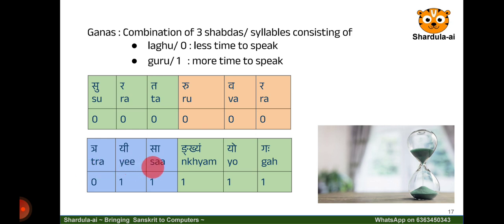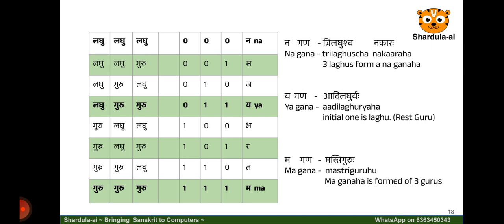Contrast that to another line in the same composition: trai saankhyam yoga. Each of these words takes longer time except for the first word trai. So ye is the bigger ye, sa, nkyam with the am matra, yo with the oki matra — all of this has a longer time duration to speak. Looking at all these Ganas, we have a total of eight values. Starting with 000, which is laghu laghu laghu, such a word is called Nagana — three laghus.